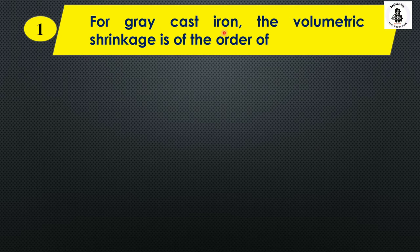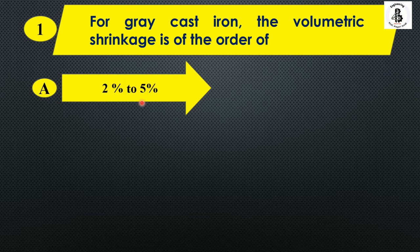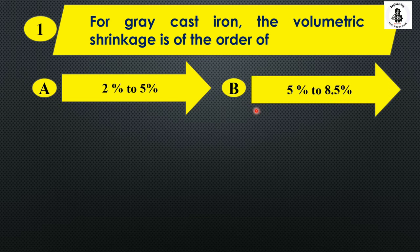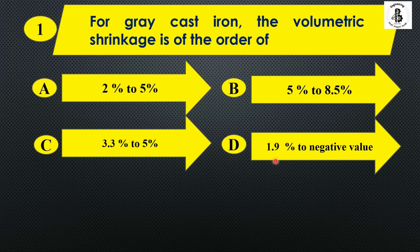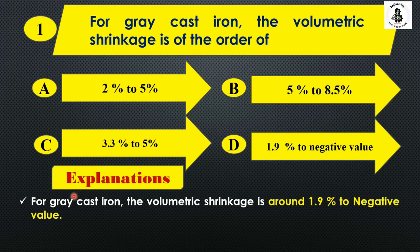For gray cast iron, the volumetric shrinkage is of the order of: Option A: 2% to 5%, Option B: 5% to 8.5%, Option C: 3.3% to 5%, and Option D: 1.9% to a negative value. For gray cast irons, the volumetric shrinkage during casting is around 1.9% to its negative value. So the right answer is Option D.